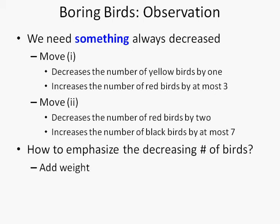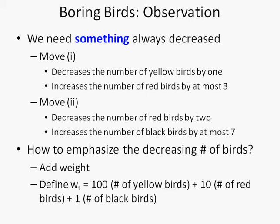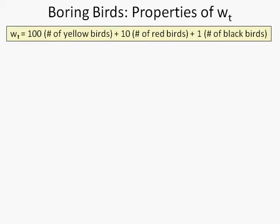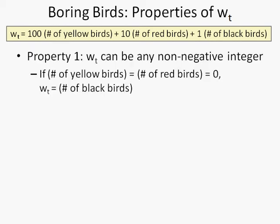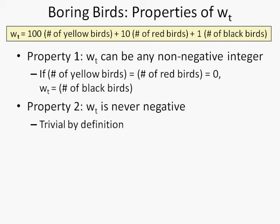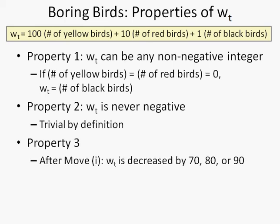A possible approach is to add weight. We define a variable Wt as 100 times the number of yellow birds, plus 10 times the number of red birds, plus the number of black birds. There are some properties of Wt. First, it can be any non-negative integer — for example, by setting yellow and red birds to 0, Wt equals just the number of black birds. Second, Wt is never negative. After move 1, Wt is decreased by 70, 80, or 90.